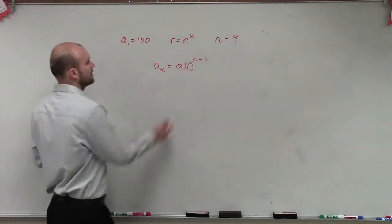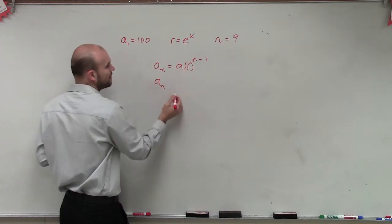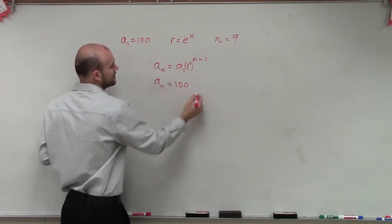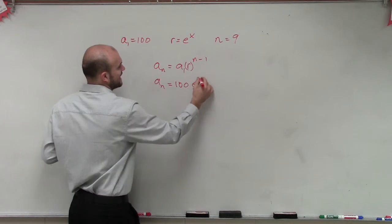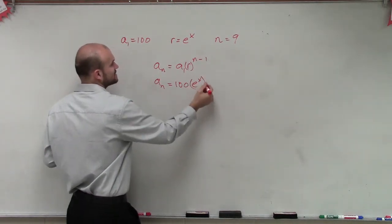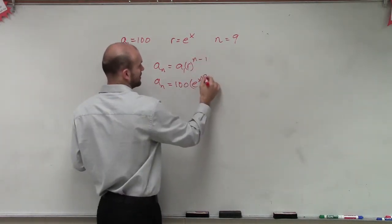Let's just plug in what we know. We want to figure out what a_9 is, which equals a_1, which is 100, times r, which is e to the x, raised to the 9 minus 1.